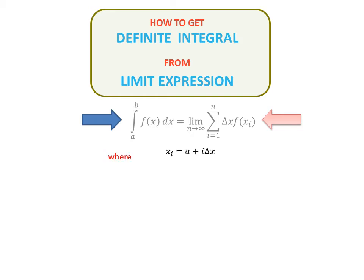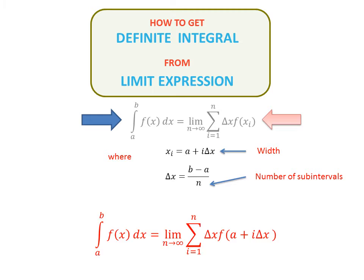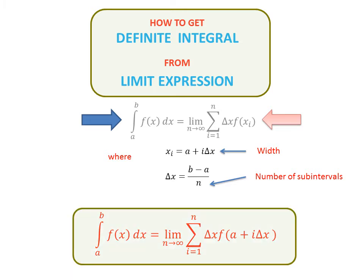Here, xi is equal to a plus i delta x. Delta x is the width of the subinterval, and delta x is equal to (b minus a) over n, where n is the number of subintervals. If we plug these two pieces of information into the above formula, we get a formula that helps us find a definite integral from a limit of a sum.